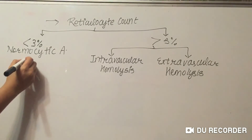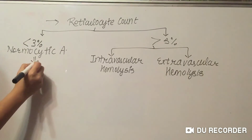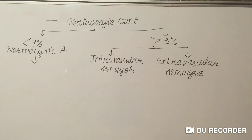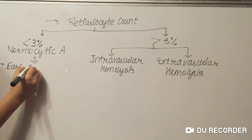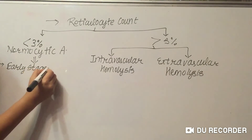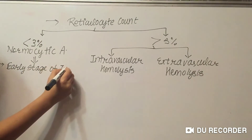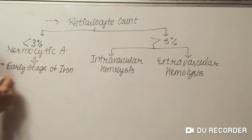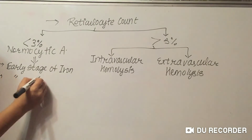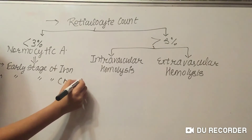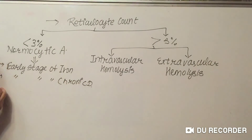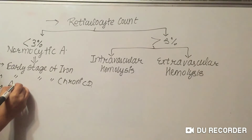Normocytic anemia normally occurs in the bone marrow. It includes early stage of iron deficiency anemia, early stage of chronic disease, and aplastic anemia.